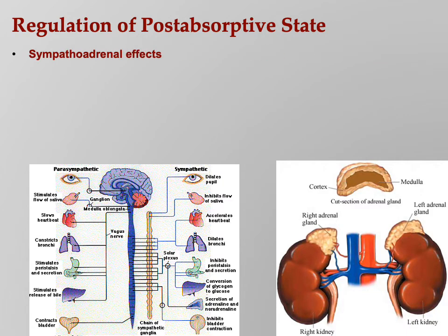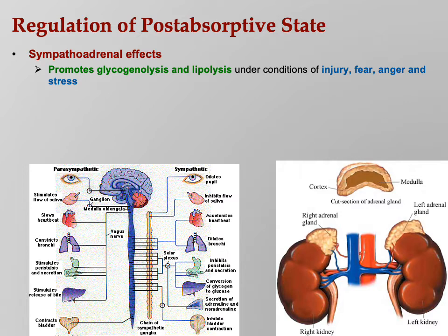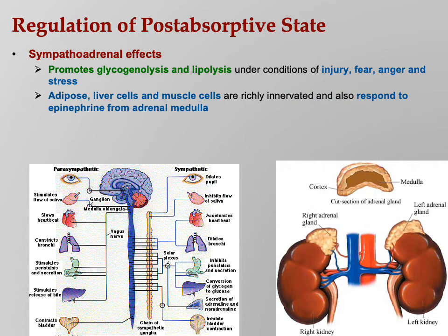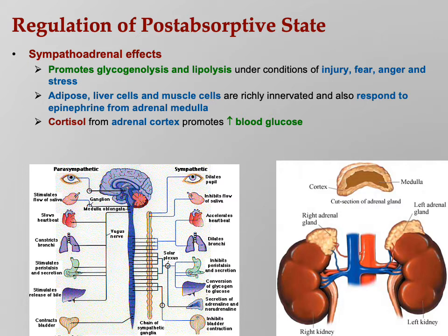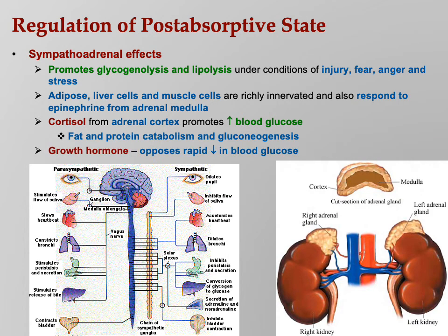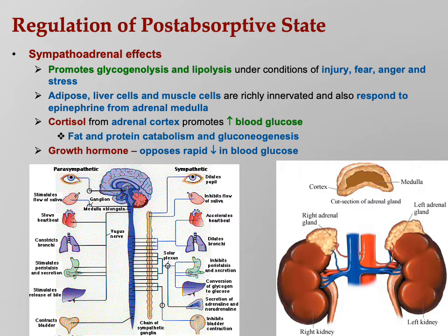Regulating the post-absorptive state also involves sympatho-adrenal effects. The sympathetic nervous system promotes glycogenolysis and lipolysis under conditions of injury, fear, anger, and stress — you need lots of blood glucose to make ATP. Adipose, liver, and muscle cells are richly innervated and also respond to epinephrine from the adrenal medulla. Cortisol from the adrenal cortex promotes blood glucose through fat and protein catabolism and gluconeogenesis — it raises blood glucose by breaking down fats and proteins and converting the components into glucose. Growth hormone also keeps blood sugars high, because if you're growing, you need energy. This all fits together — you don't have to memorize it; it makes sense.